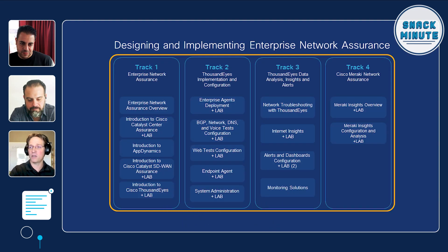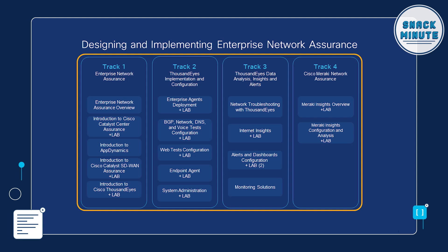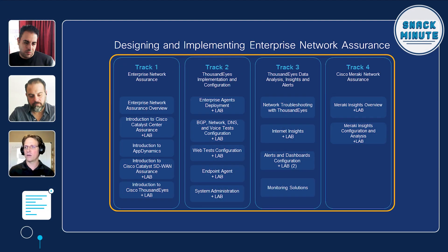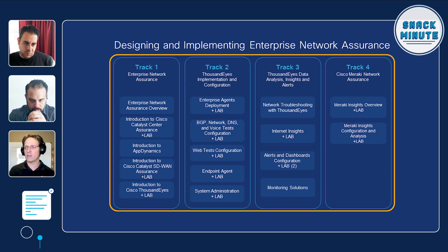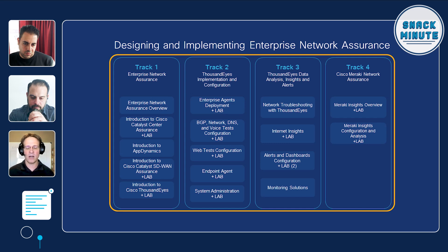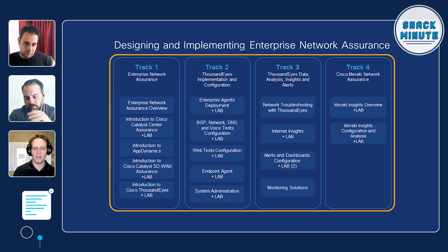So here is the Enterprise Network Assurance Cisco U Learning Path. It's comprised of four tracks and would be equivalent to a four-day instructor-led training. We have 16 courses within this learning path and I believe 13 labs, so there's a lot of hands-on things to do, as you'd typically expect from our trainings. We will also take a look at the lab topology a bit later.